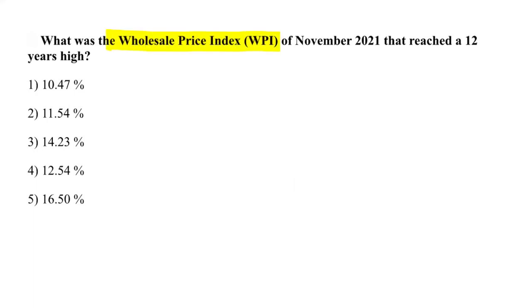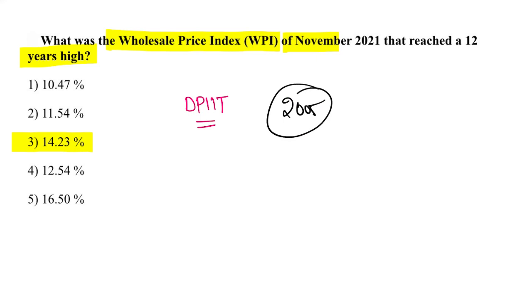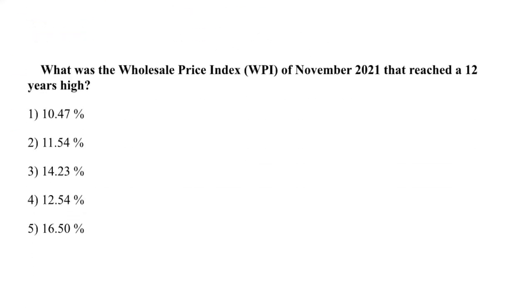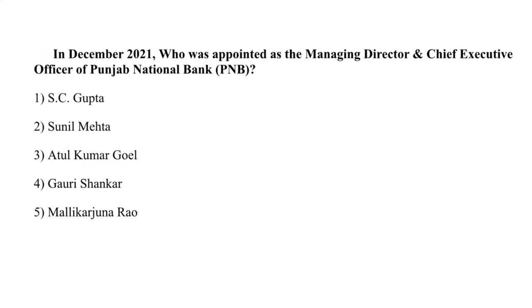The Wholesale Price Index for November reached a 12-year high at 14.23%. This data was released by DPIIT, the Department for Promotion of Industry and Internal Trade, under the Ministry of Commerce and Industry. This is the highest wholesale price inflation recorded since April 2005.